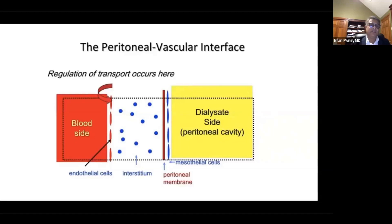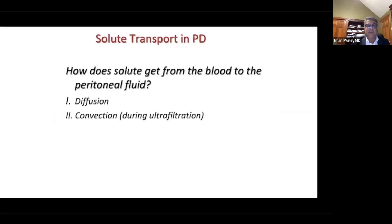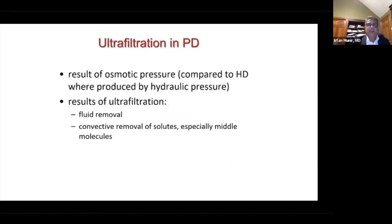Solute transport occurs at the endothelial level. There are three different kinds of pores which exist in this lining. A second mechanism through which solute transport occurs is convection, which is assisted by the ultrafiltration of fluid from the blood compartment to the peritoneal cavity. Ultrafiltration during peritoneal dialysis takes place through osmosis.